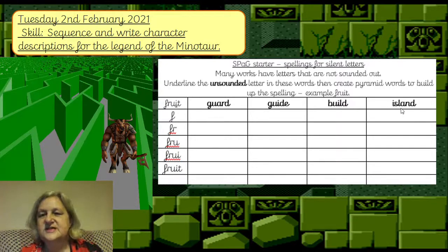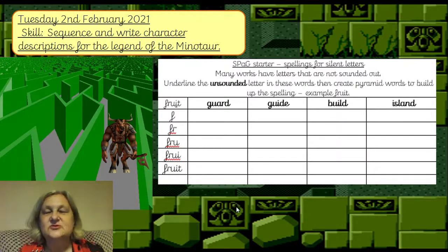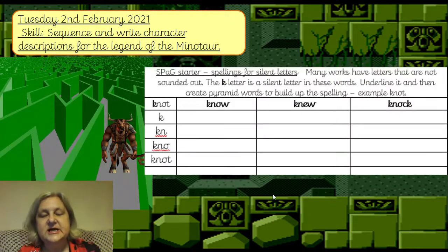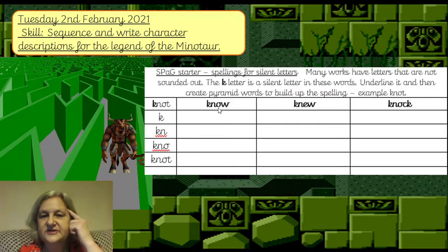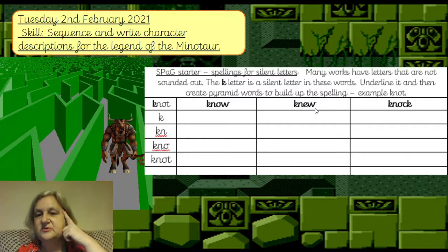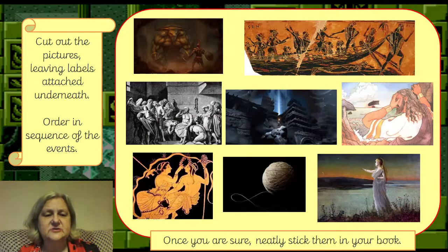Island will take you right down the pyramid. We don't say 'is-land' — I actually did that when I was little, reading on my own. Another one I remember is 'gnome', which has a silent G. Then there's the K version: 'know', 'new', 'knock' — the K is not sounded out. 'Know' as in knowing in your head, and 'knock knock' on the door. Pause the video and complete those.